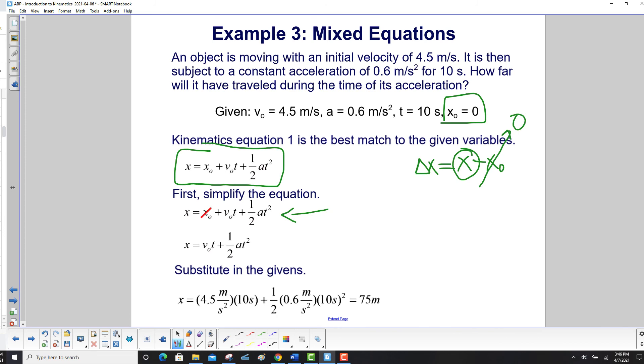We plug in our variables, and notice you have 10 seconds over here, all by itself. Over here, you're squaring the 10 seconds. A very common error is to forget to square this value, so please don't make that. And you carry out the math, you get 75 meters.